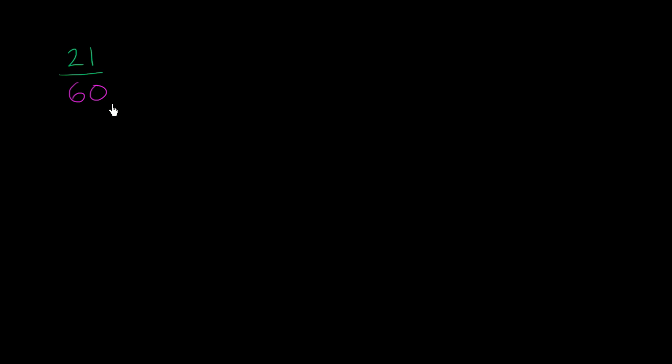We can rewrite a fraction as an equivalent fraction if we multiply the numerator and the denominator by the same quantity, or divide them by the same quantity. Looking at this numerator and denominator: 21 is divisible by 3, 7, 1, and 21. And 60 is clearly divisible by 3 as well, though not by 7 or 21.